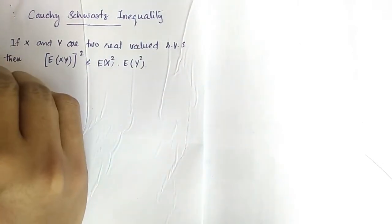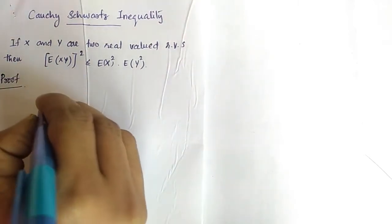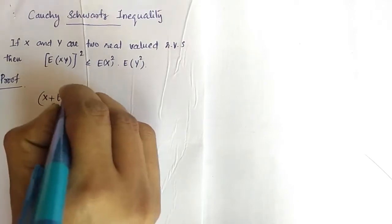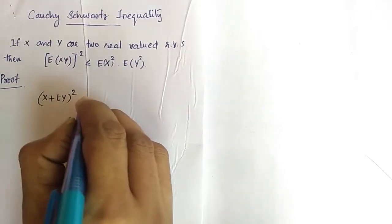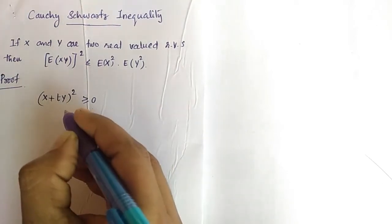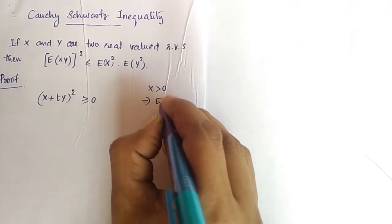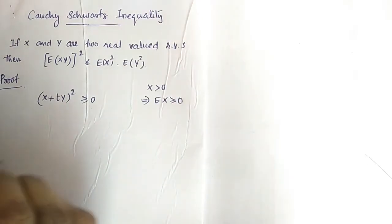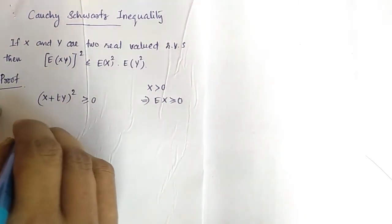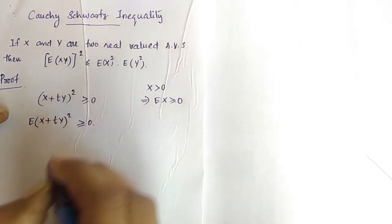We can prove this inequality by considering a real-valued function that is x plus ty, that whole square. Since it is a square, it will be always greater than or equal to 0. Now by the properties of expectation, a random variable x greater than 0 will imply expectation of x also will be greater than or equal to 0. This is a property of expectation. So we can apply this property here: expectation of x plus ty, that whole square, will be greater than or equal to 0.